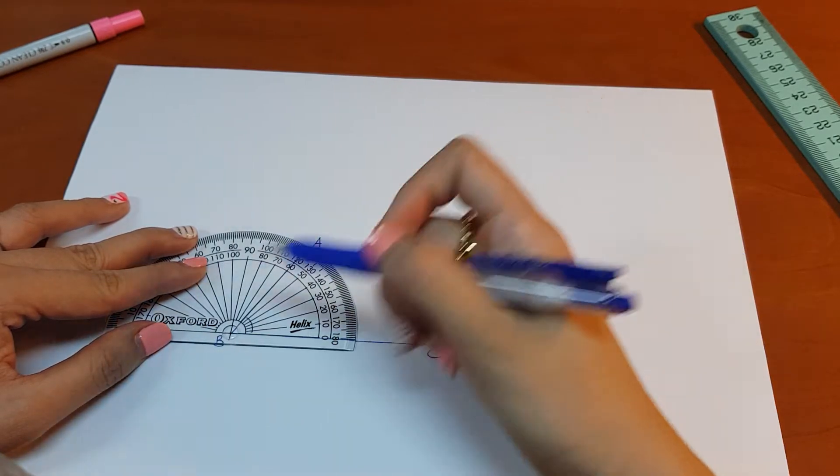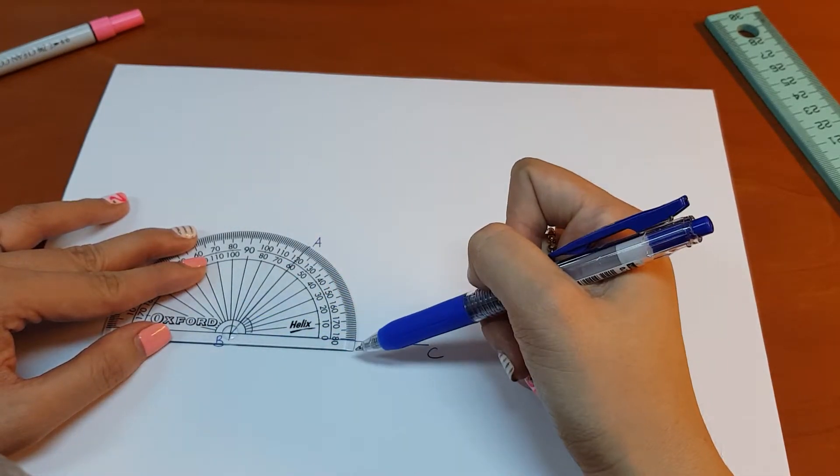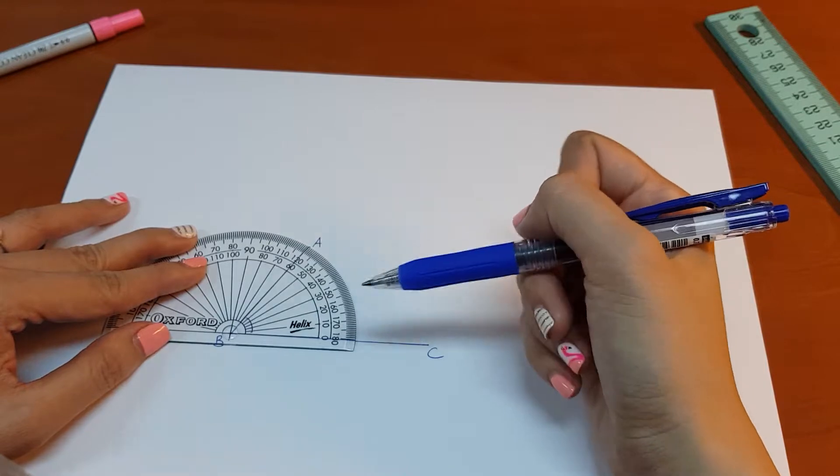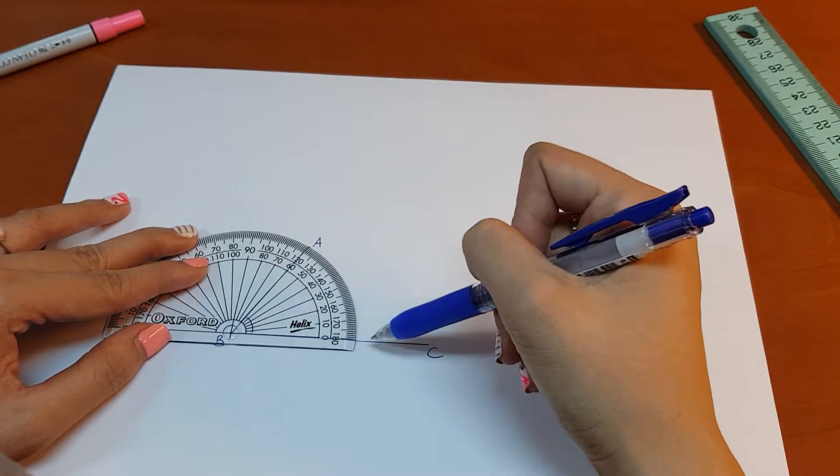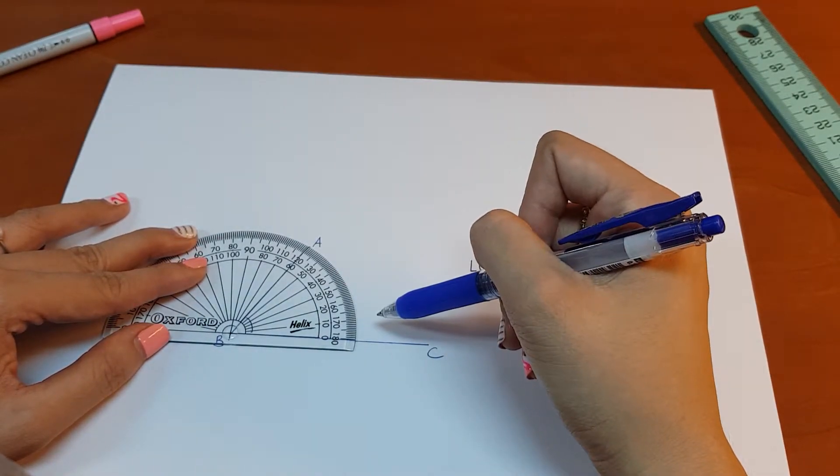There we have it. The vertex meet, the lines meet. Now, we will measure the angle. Remember, the opening is on the right. Therefore, we use the inner scale.